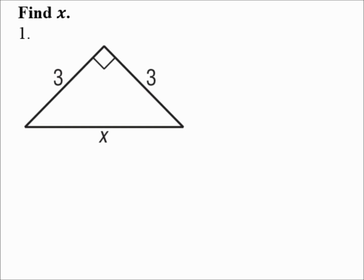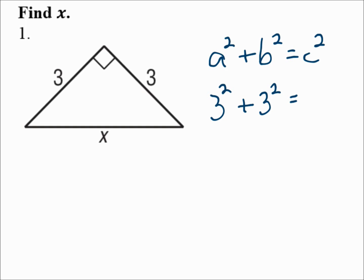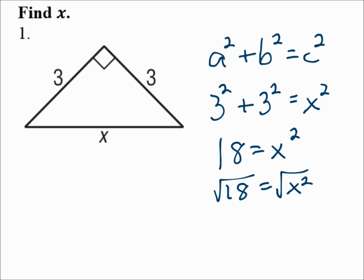Find X. Number 1: we have a right triangle where the two legs are length 3, and the hypotenuse is length X. To find X, use the Pythagorean Theorem: A squared plus B squared equals C squared. A and B are 3 and 3, and C is X. So 3 squared plus 3 squared is 9 plus 9, which is 18, and that equals X squared. Taking the square root of each side, the square root of 18 is about 4.24.